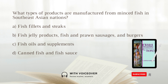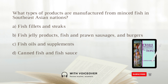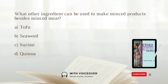What types of products are manufactured from minced fish in Southeast Asian nations? A. Fish fillets and steaks. B. Fish jelly products, fish and prawn sausages, and burgers. C. Fish oils and supplements. D. Canned fish and fish sauce. Answer: B. Fish jelly products, fish and prawn sausages, and burgers.